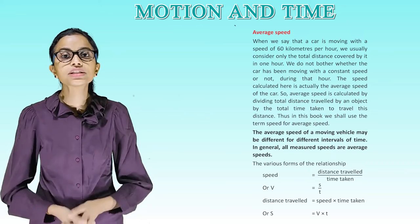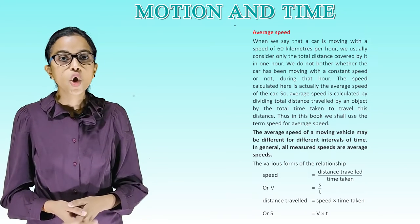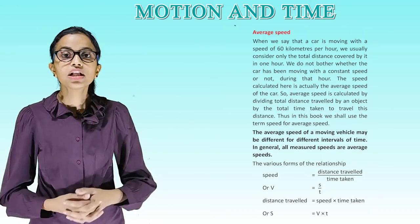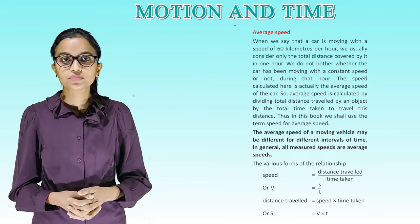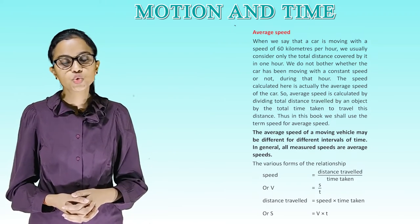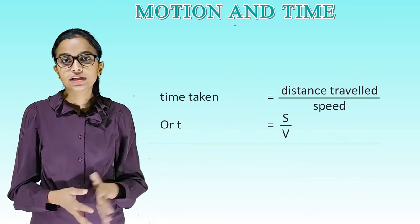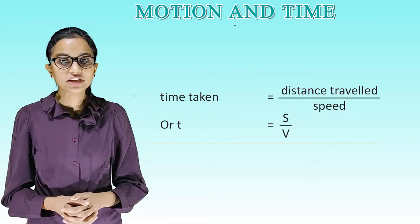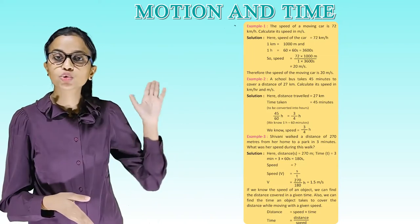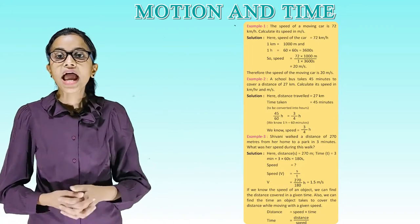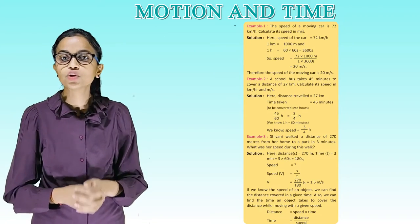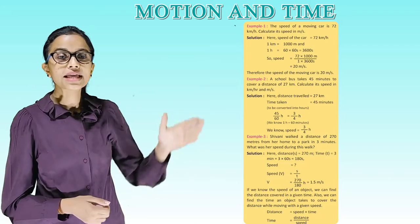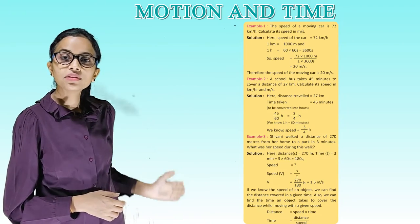The various forms of the relationship: speed equals distance traveled divided by time taken, or V equals S divided by T. Distance traveled equals speed into time taken, or S equals V into T. Time taken equals distance traveled divided by speed, or T equals S divided by V. So students, please go through these examples and try to understand or also do them in your copy. Example 1, example 2, and example 3.